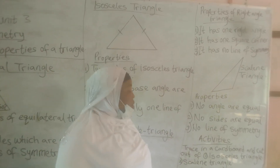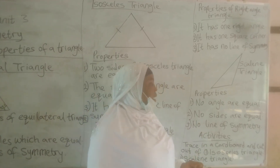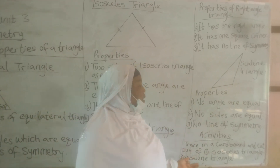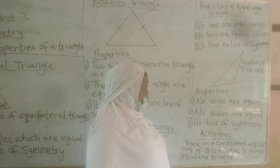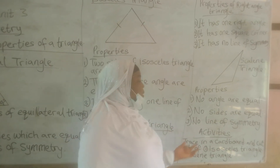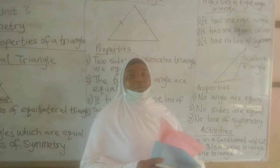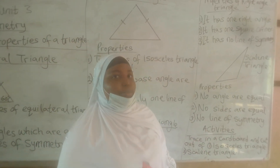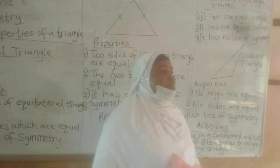For your activity, you are going to trace a triangle in a cardboard. You will draw that scalene triangle, then you are going to snap it and send it to my WhatsApp. See you now.